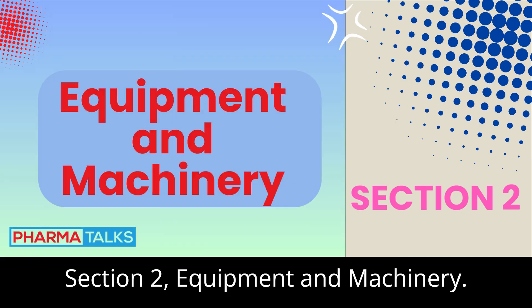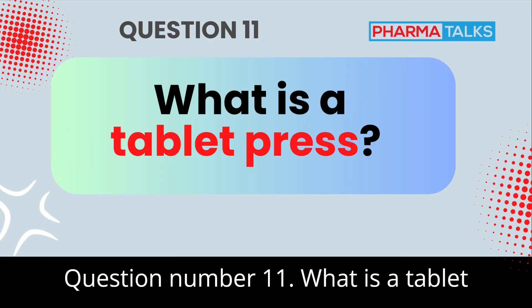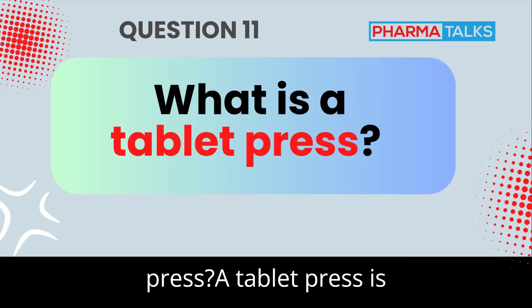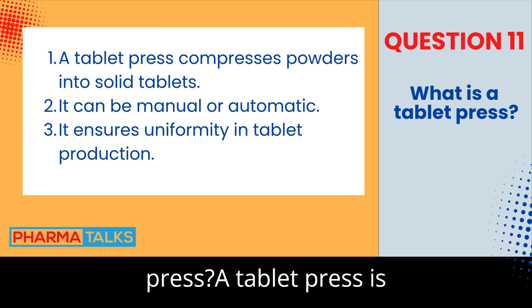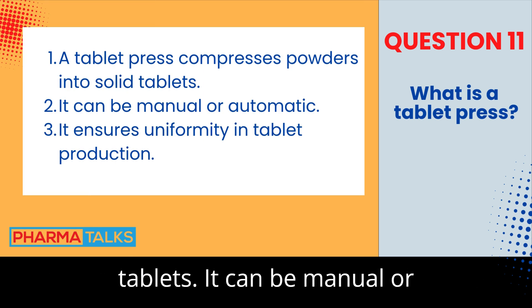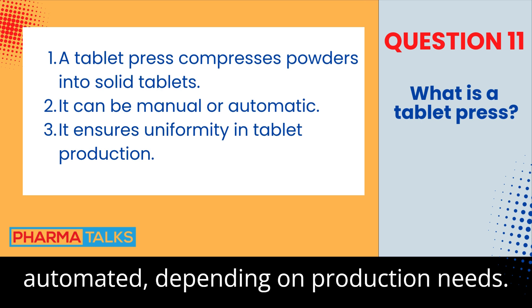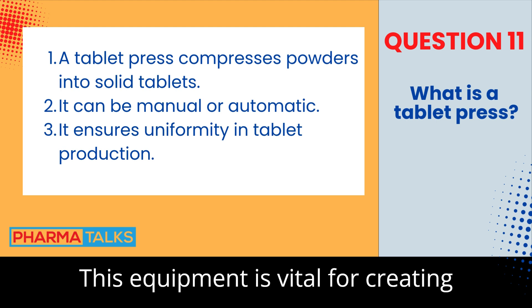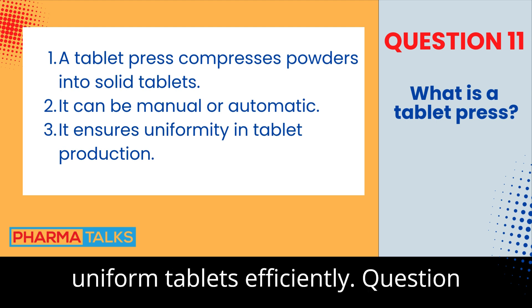Section 2: Equipment and Machinery. Question 11: What is a tablet press? A tablet press is a machine that compresses powder into tablets. It can be manual or automated, depending on production needs. This equipment is vital for creating uniform tablets efficiently.